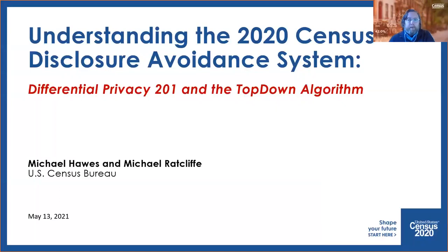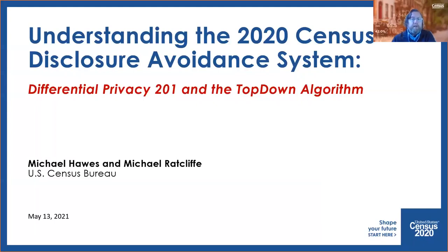Welcome to the third webinar in our series on Understanding the 2020 Census Disclosure Avoidance System. Today's session will provide a deeper discussion of some of the concepts underlying our implementation of differential privacy in the 2020 Census Disclosure Avoidance System's top-down algorithm. I'm joined today by my colleague Michael Ratcliffe, Senior Advisor for FRAMES in the Census Bureau's Geography Division, who will be speaking about the top-down algorithm's geographic hierarchy.